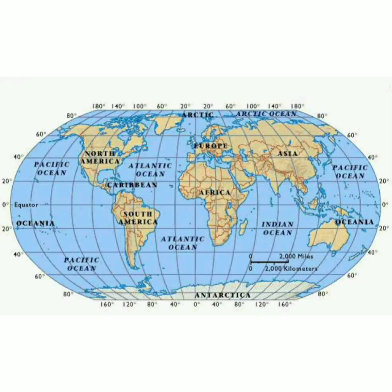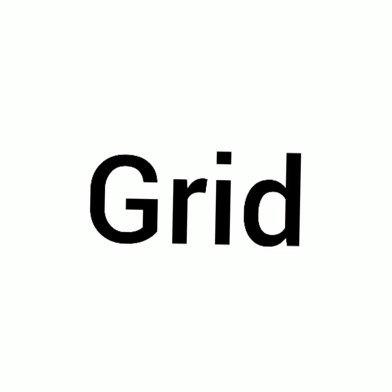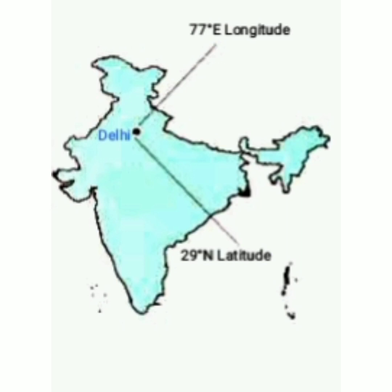Discovery of places on earth. To determine the correct location of a place, it is important to know where longitude and latitude lines meet or cross each other on the globe. The web of latitude and longitude lines is called a grid. For example, Delhi is situated where 77 degree east longitude and 29 degree north latitude cross each other. That's all for today. Bye-bye.